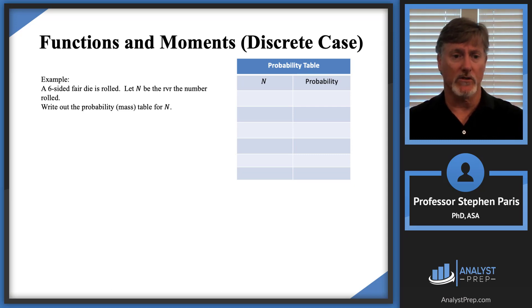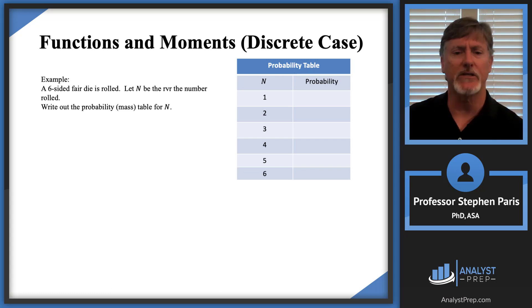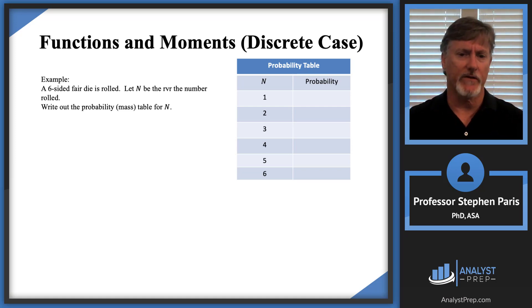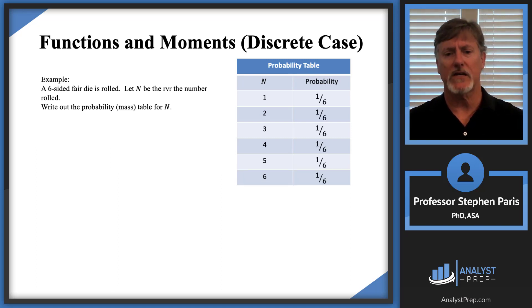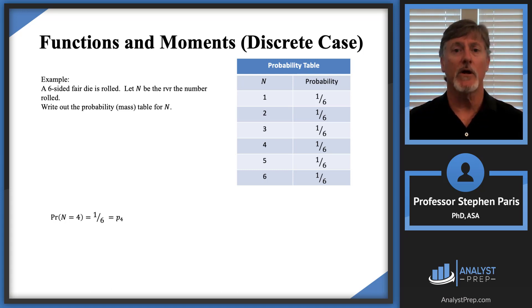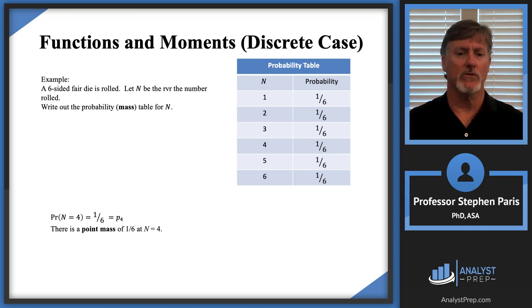In this case the values are pretty obvious: you're rolling a six-sided die, so the values are one, two, three, four, five, or six. The second column contains the corresponding probabilities for each event. The event that cap N equals one means you roll a one. What's the probability? It's a fair die, so that probability is one-sixth, as it is for each of the other values. The probability that cap N equals four is one-sixth — we'd denote that as p(4). The terminology is that there is a point mass of one-sixth at cap N equal to four, which is why it's called a probability mass table.